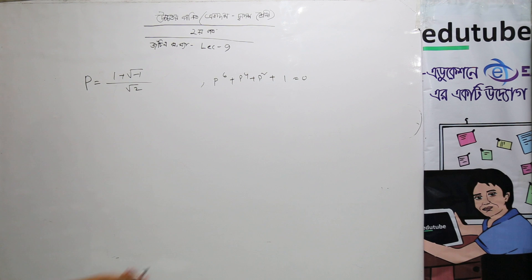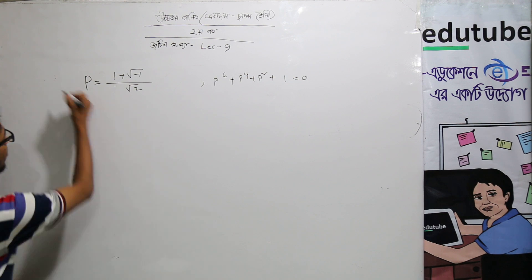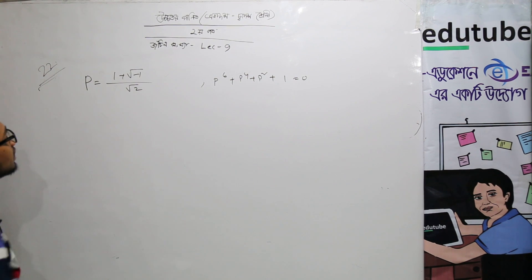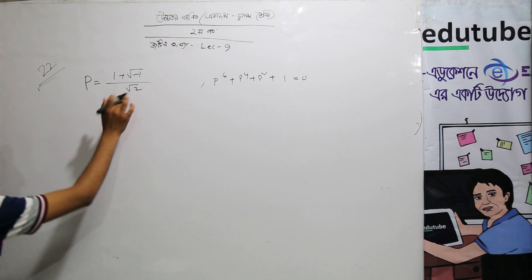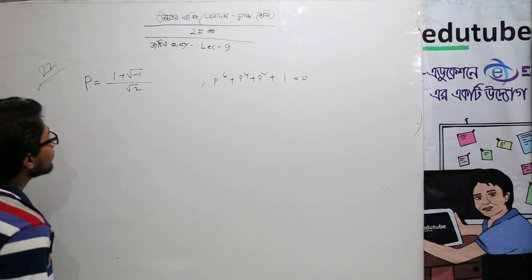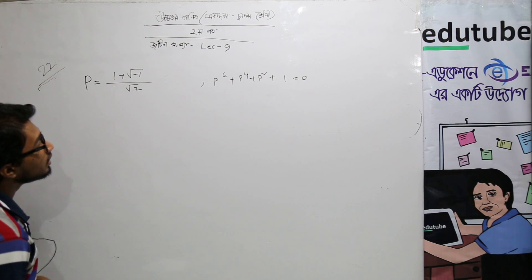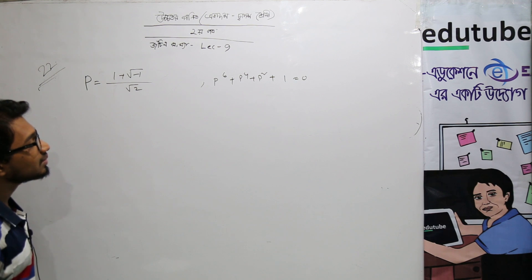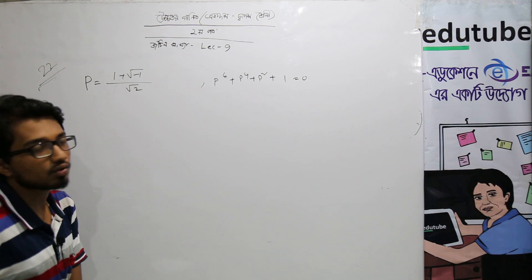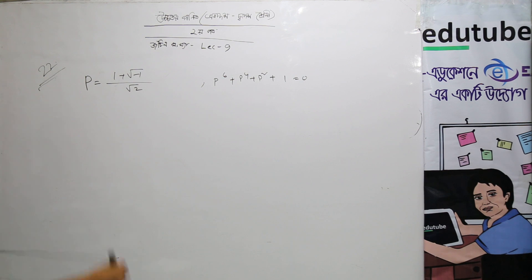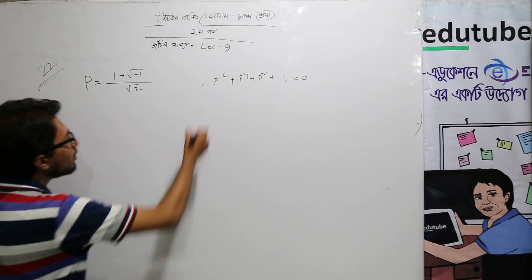Today I am going to start with math. This math is p equals to 1 plus root over minus 1, divided by root over 2. We will prove that p^6 plus p^4 plus p^2 plus 1 equals to 0.